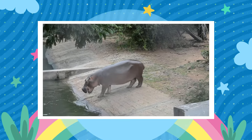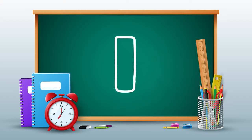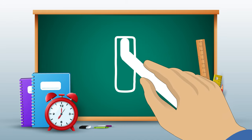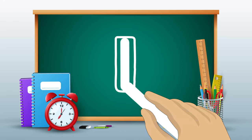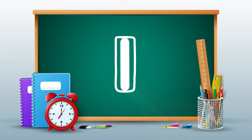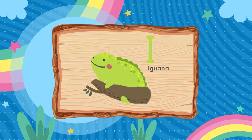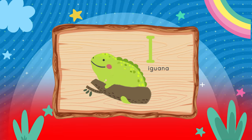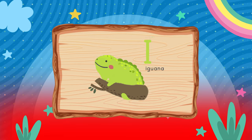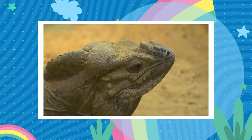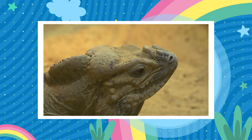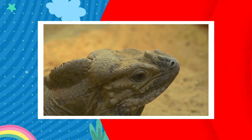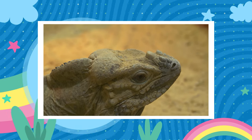The next letter is an easy one, it's the letter I. Pull down. I is for Iguana. Iguana.